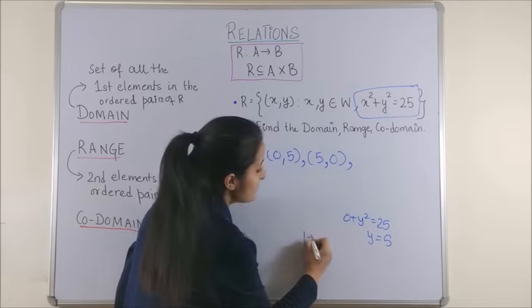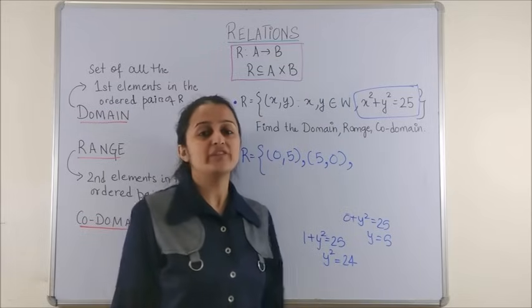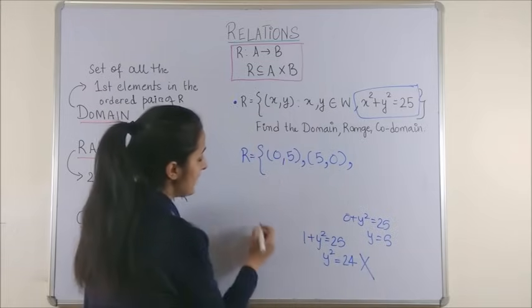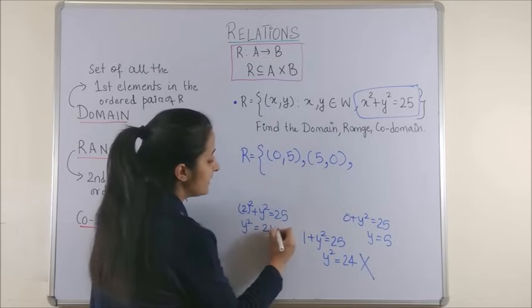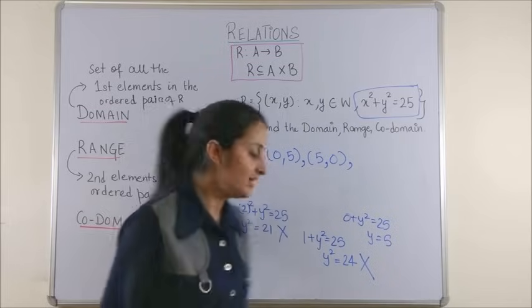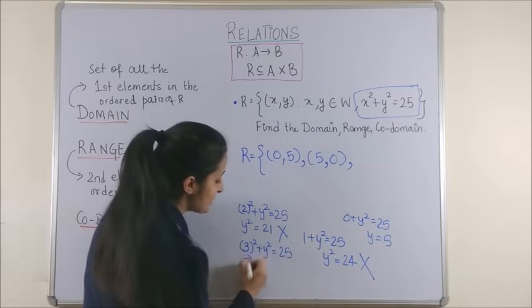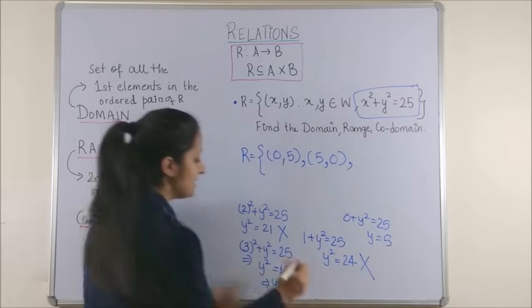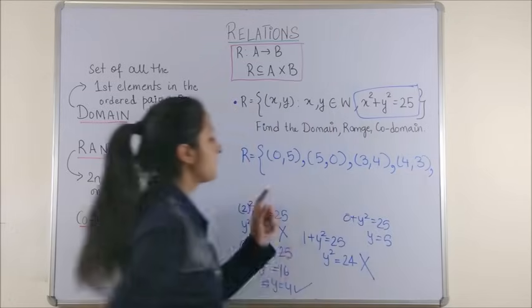Moving to 1, if I say 1 plus Y square is equal to 25, that leads us to Y square is equal to 24. Now, square root for 24 will not give us a perfect whole number. That's why you don't consider this. Taking X equal to 2, so this becomes 2 square plus Y square equal to 25. That gives us Y square is equal to 25 minus 4, which is 21. Once again, not a whole number. Next, taking 3, 3 square plus Y square is equal to 25 shall give us Y square is equal to 16, where we get a whole number. So, the next pair is 3, 4 and, of course, 4, 3.